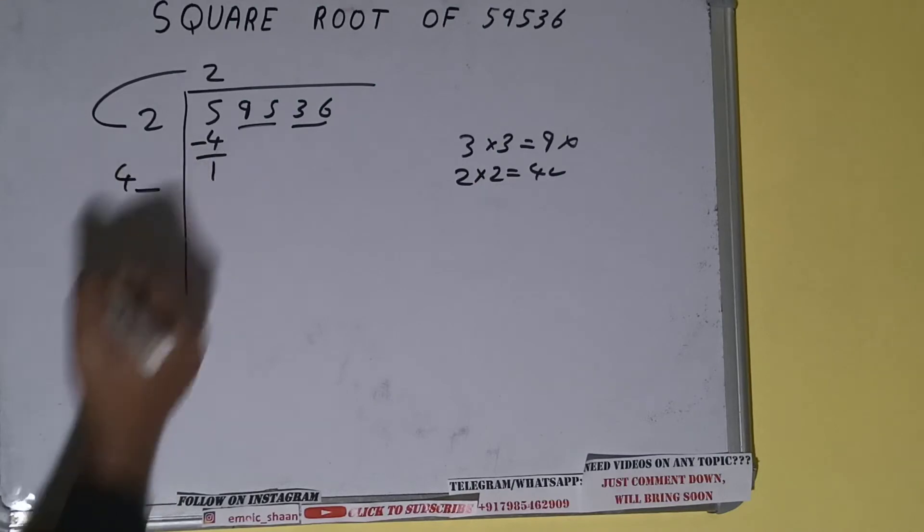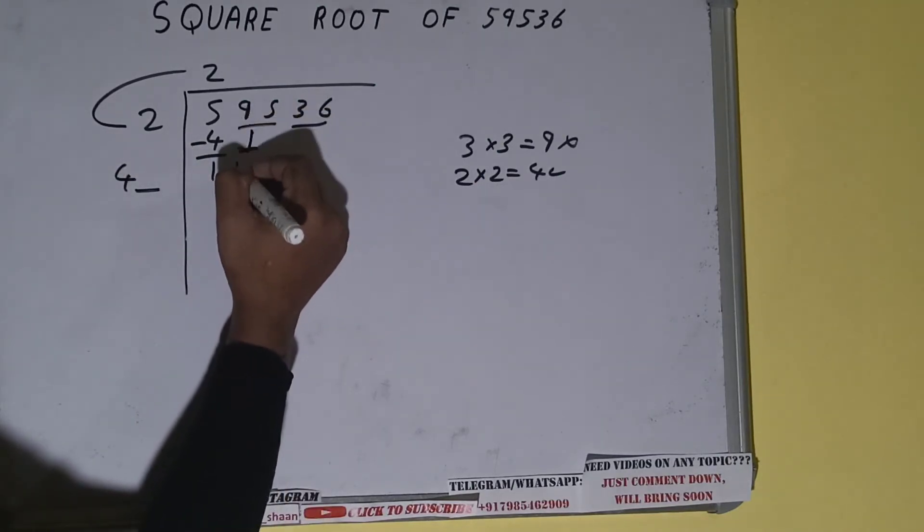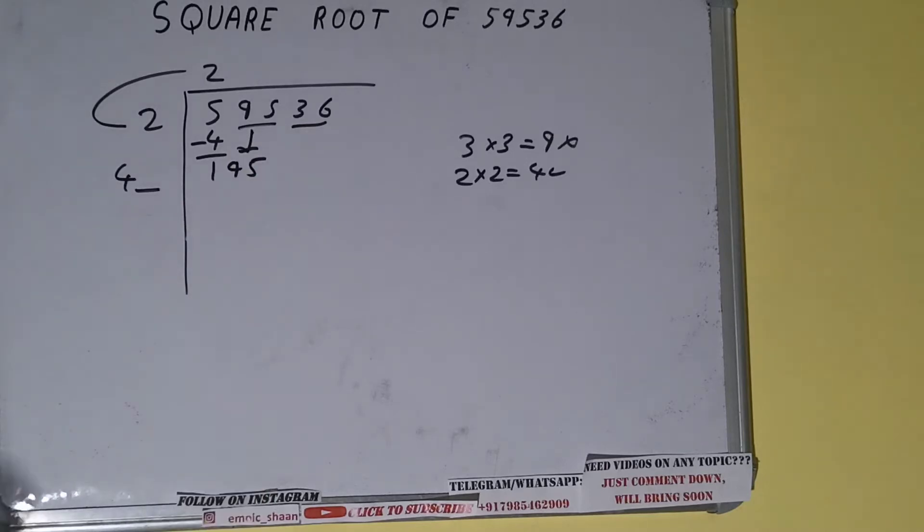Write it here and keep a digit extra, and this number we need to make it big. So bring the next pair down and it will become 195.